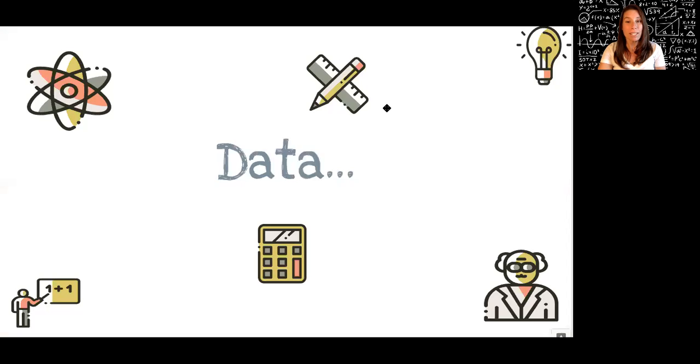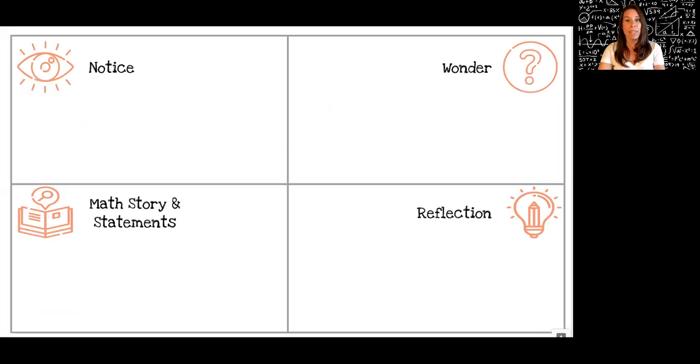So we're going to be noticing and wondering about data. This is how I'd like you to set up your paper or your whiteboard. So section off four parts and you will recognize noticing and wonder. You can just draw the pictures. You don't have to write down the words, but pick either the picture or the word so I know which box you're working in. So section off your paper, label it, and then continue on. Press pause so you can finish.